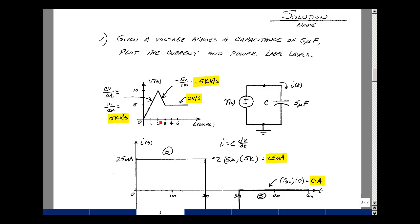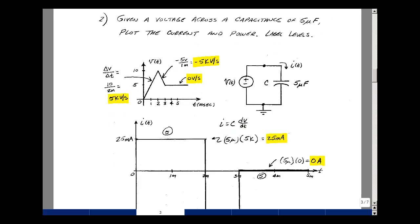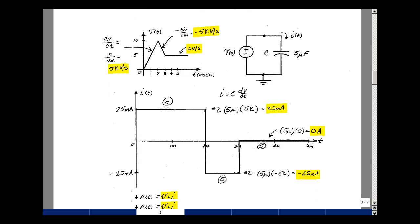That would be the rise over the run. So I have a rise here of 10 volts in a run of 2 milliseconds, and so that would be 5,000 volts per second. Slope here is changing 5 volts in 1 millisecond, so minus 5 kilovolts per second, and then a slope of zero. Current is equal to C dV dt. So since I now know the slope and the value of the capacitor, I can now multiply those two together. So 5 microfarads times 5,000 volts per second, and I get a constant 25 milliamps.